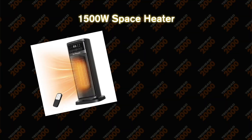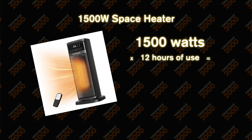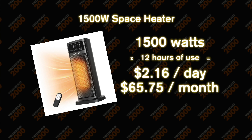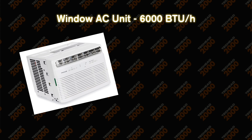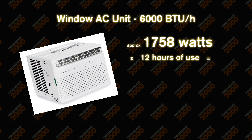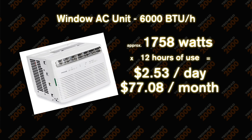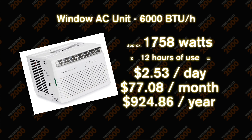It takes an insane amount of energy to make things colder or hotter. This space heater is rated for 1,500 watts. Assuming you had it on for 12 hours a day, which is possible in a very cold climate, it'll cost you $2.16 per day, $65.75 per month, and $788.94 per year. This is a window air conditioning unit rated for 6,000 BTUs per hour — British thermal units, basically the same as watts. Running it for 12 hours a day, you're looking at $2.53 per day, $77.08 per month, and $924.86 per year.